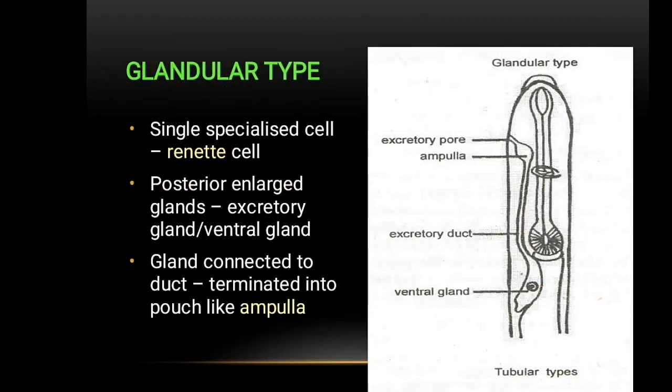Regarding the types of excretory system — the system is varied among groups. It is completely absent in Dorylaimoidea, whereas Longidorus macrosoma has a well-developed excretory system. There are two types: glandular and tubular. The glandular type is present in class Adenophorea, and the tubular type is present in class Secernentea.